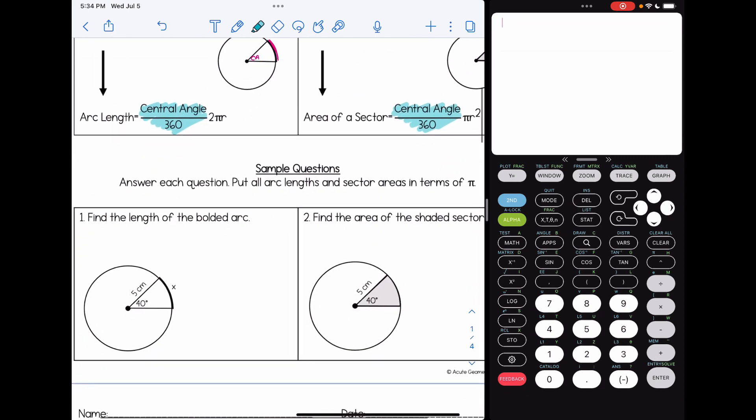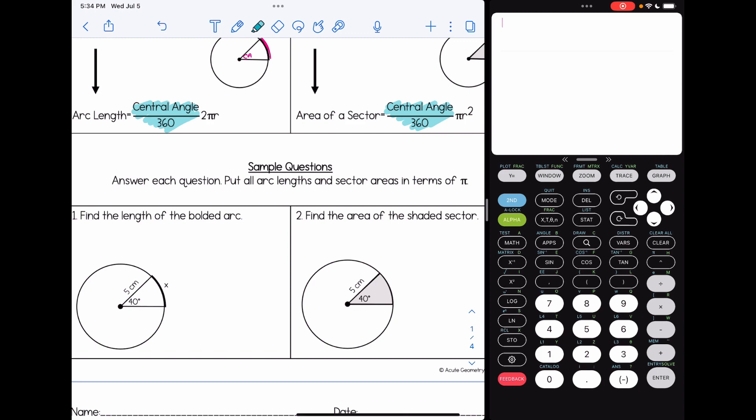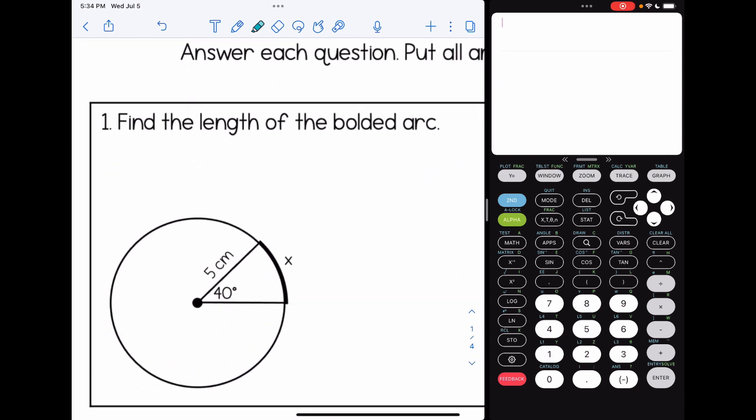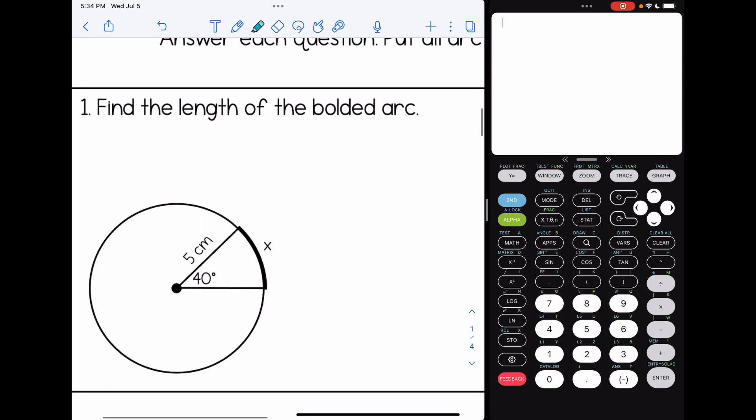All right, let's look at some examples. Our directions here say to put everything for arc length and area of a sector in terms of pi. Number one, find the length of the bolded arc. So we're looking for arc length, so it's going to be the central angle over 360 and 2πr, and our radius in this case is 5. I know I'm using the arc length formula because it's asking me length and arc. I can see that it's bolded in the picture as well.